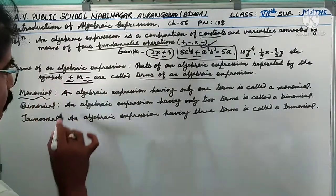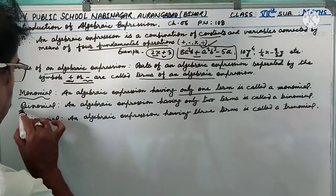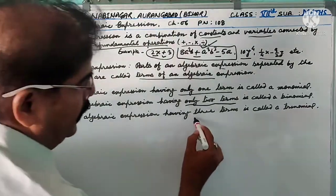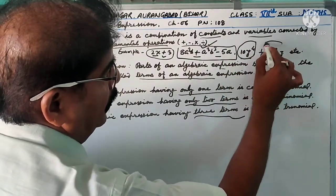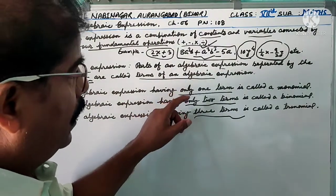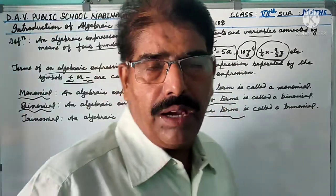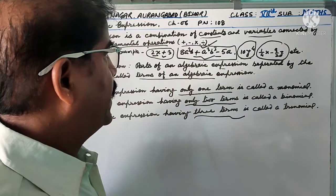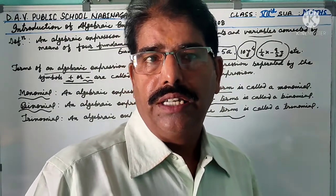A monomial is an algebraic expression having only one term. A binomial is an algebraic expression having only two terms. A trinomial is an algebraic expression having three terms. So monomial has one term, binomial has two terms, and trinomial has three terms. Next, we move to multiplication of algebraic expressions.